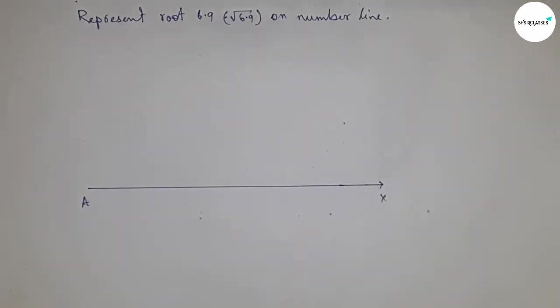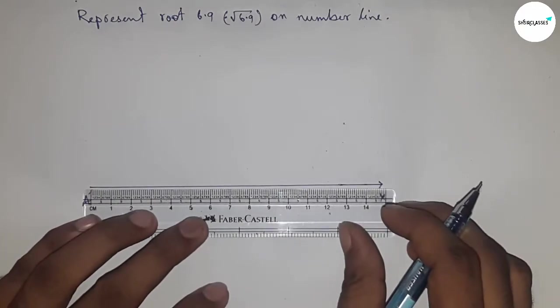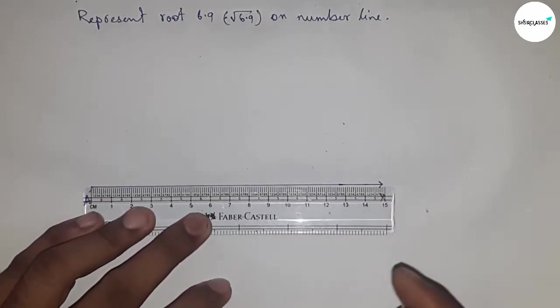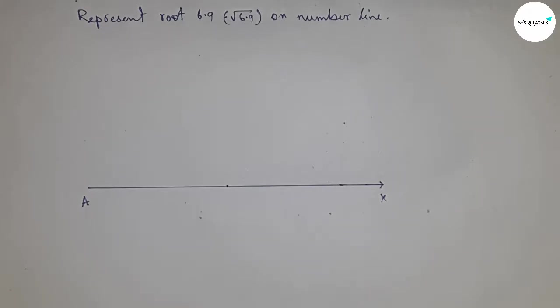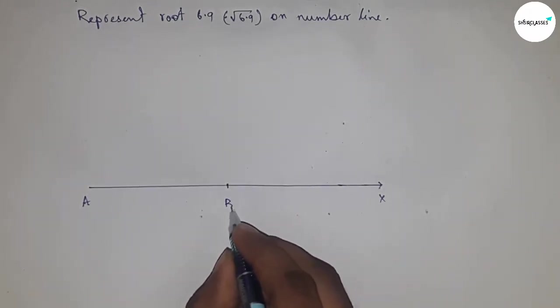Now take a length of 6.9 centimeters and mark it as point B, so AB is 6.9 centimeters.